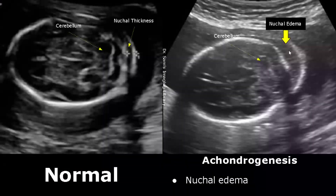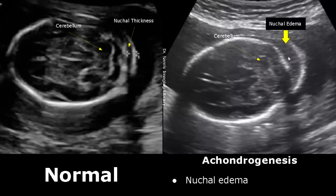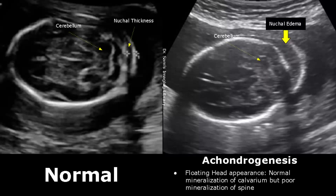Nuchal edema is another feature of achondrogenesis. Normal nuchal thickness looks like this in transverse view, measured when we see the cerebellum. In this image we see increased nuchal thickness due to nuchal edema, which is very prominent. The skull bone is developed normally, but since the spine is absent, this appearance collectively is called the floating head appearance.